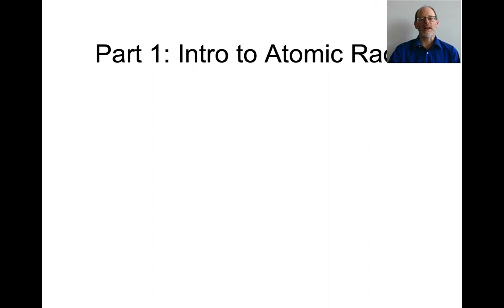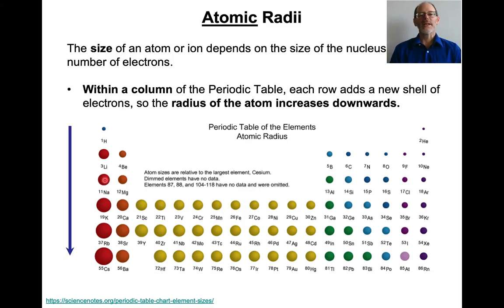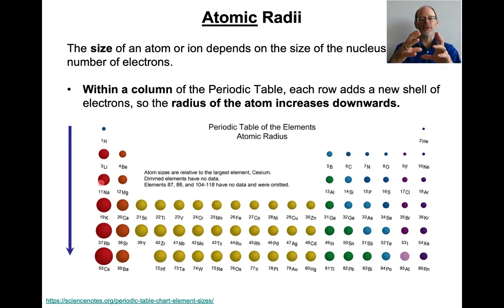Let's talk about atomic radii with respect to the periodic table. Within a column, as you go down, the atomic radius increases. The reason is that every time you jump down a row, you're adding a new shell of electrons, so the shells and the atomic radii get bigger and bigger.